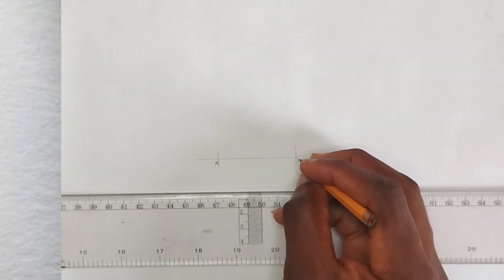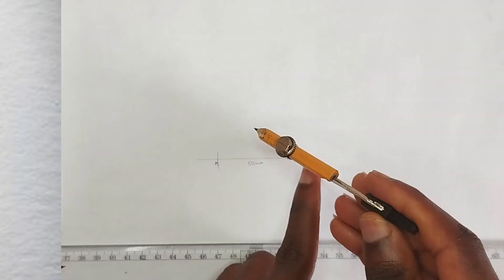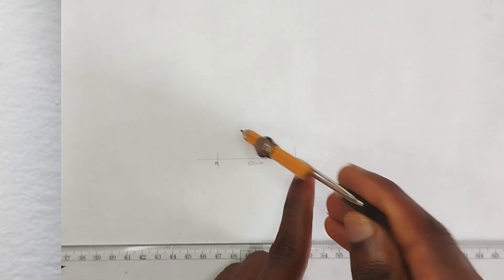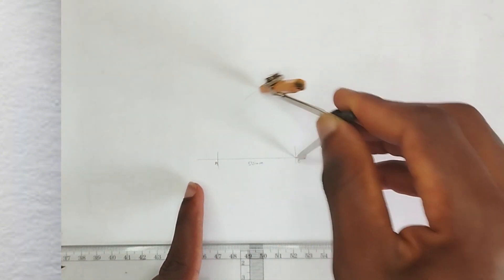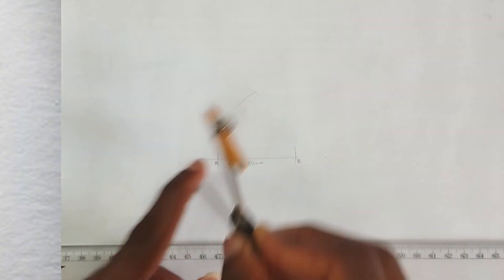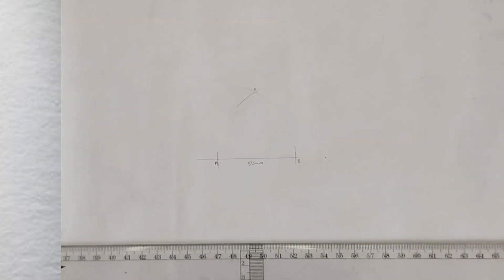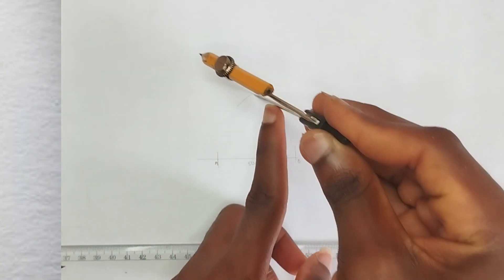Then we'll label this point as our point A and this point as our point B. This is 50 millimeter. Placing our compass at point B to point A, we'll strike an arc here. Then placing our compass at point A, we'll strike another arc. We'll label here as our center, which is point O.